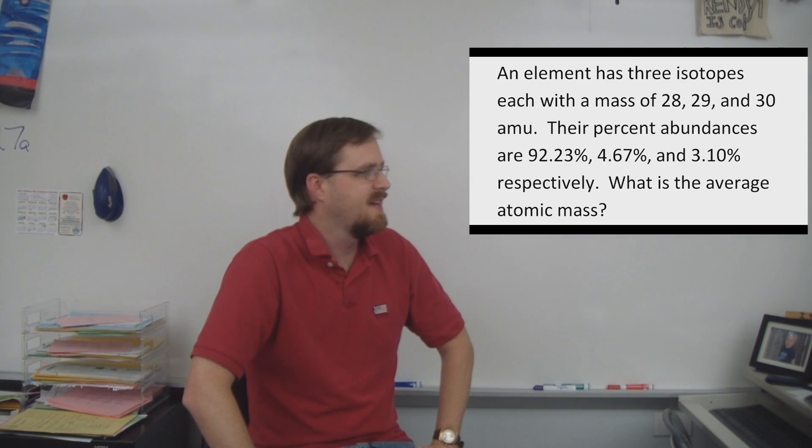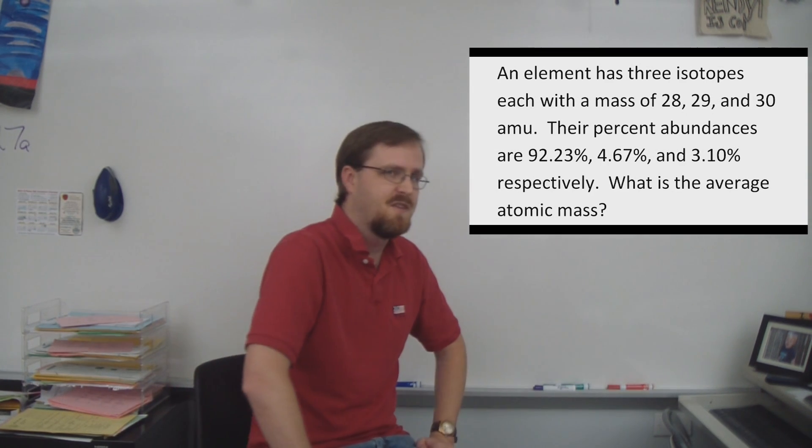Alright, so it says, An element has three isotopes, each with a mass of 28, 29, and 30 AMU. The percent abundances are 92.23%, 4.67%, and 3.10% respectively. What is the average atomic mass? It's a fair question.